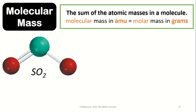Let us have sulfur dioxide, or SO2, as our example. Sulfur dioxide is comprised of one atom of sulfur and two atoms of oxygen. In getting the molecular mass of a given compound, we just need to multiply the number of atoms of each element by its respective atomic mass and then add all of those to arrive at our molecular mass.